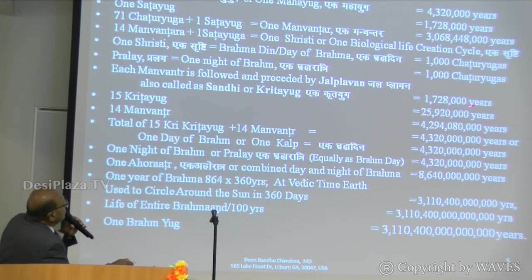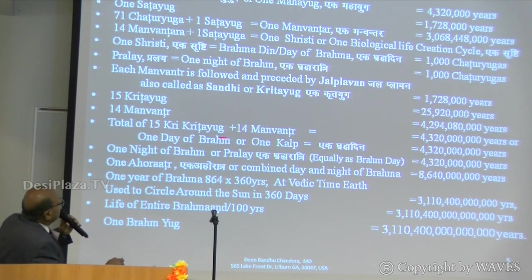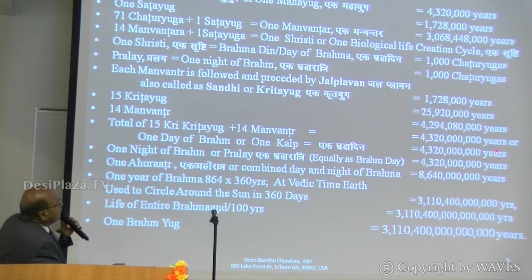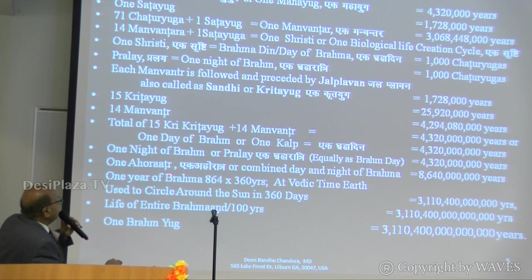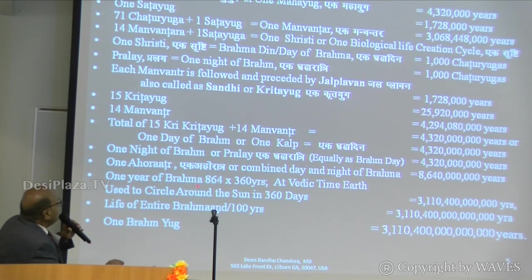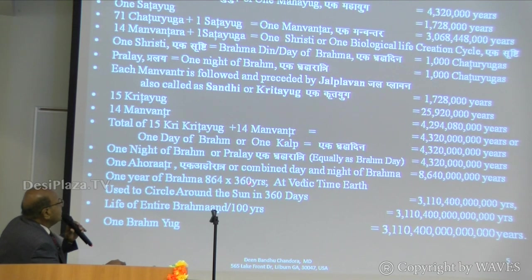15 Krita Yugas comes to this amount. 14 Manvantaras. So a total of 15 Krita Yugas plus 14 Manvantaras makes a certain number of years — that is the year count for one day of Brahma. One night of Brahma becomes the same amount. Combined day and night are called Ahoratra. One year of Brahma is 864 times 360 years.